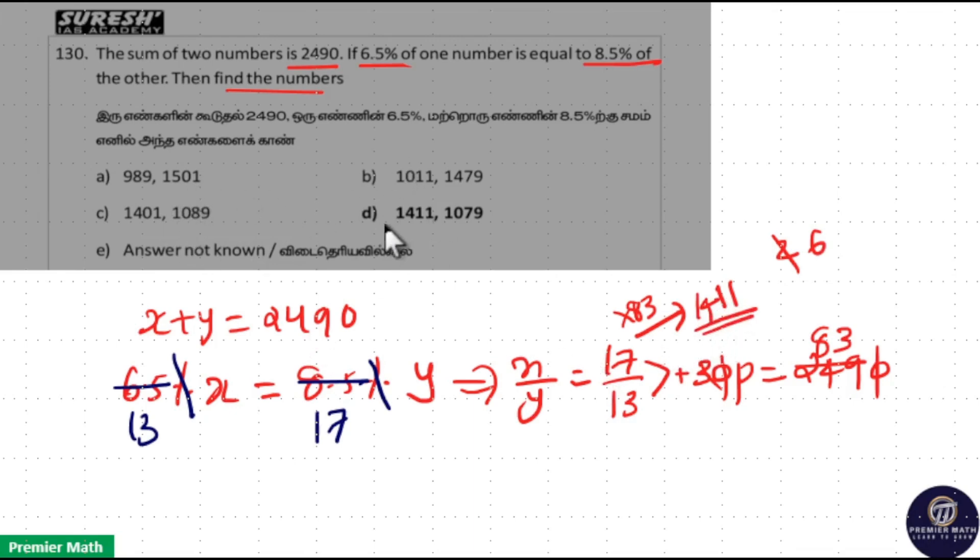If you look at this, one number is 1411, then the other number must be 1079, which gives you 2490. So this is our answer, option D is your answer. Since 'answer not known' is given, you have to find the other number as well. The sum of these two gives you 2490.